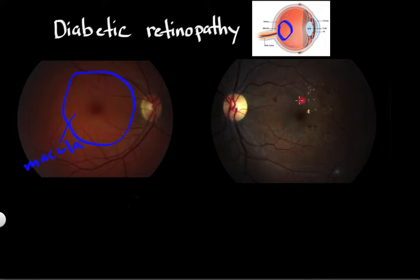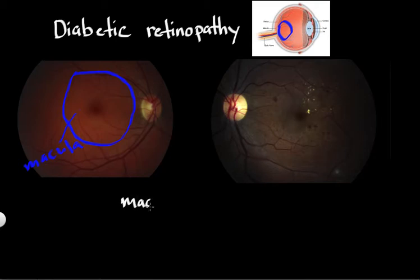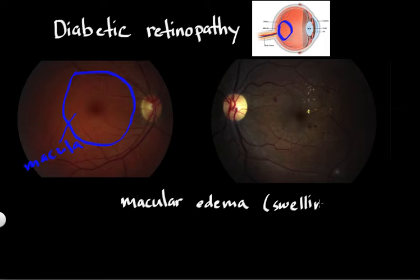You can also appreciate that there's fluid and swelling in this area. So this patient has one of the complications from diabetic retinopathy, and that complication is macular edema. That just means edema, or swelling, of the macula, and that edema and swelling comes from leaking blood vessels.